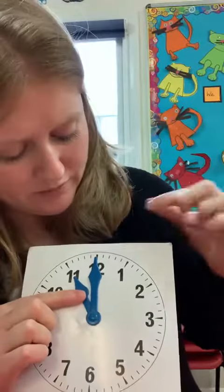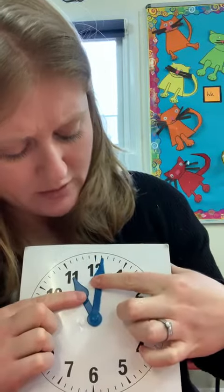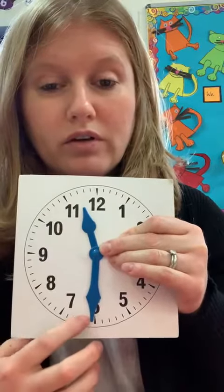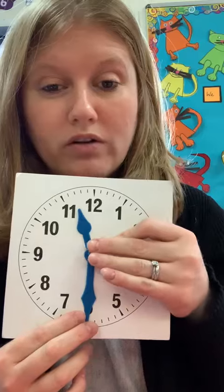So at half past eleven, the big hand moves halfway around the circle of the clock and it stops on six. And the little hand moves halfway between eleven and twelve. And then we've got half past eleven. So that's what half past looks like.